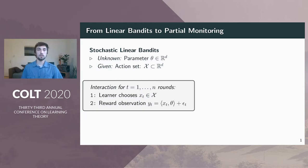The learner interacts with the environment over n rounds. In each round, the learner picks one of the actions and then observes a noisy reward. The reward is the inner product between x_t and theta. The learner's goal is to maximize the total reward or equivalently minimize the regret. This is a loss compared to the best in hindsight solution.